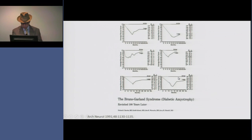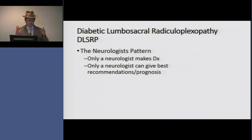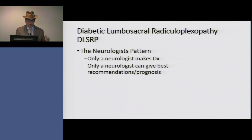Diabetic lumbosacral radiculoplexopathy is really the neurologist's neuromuscular pattern. It often seems that only a neurologist is able to make this diagnosis — patients often have seen many doctors and sometimes had surgery before reaching a neurologist. The neurologist is often the only physician who can give the patient and family the best recommendations on therapy, advise what to avoid such as surgery, and provide the most reasonable prognosis. This is the neuromuscular disorder where the neurologist shines and is very important in case management. Thank you very much.